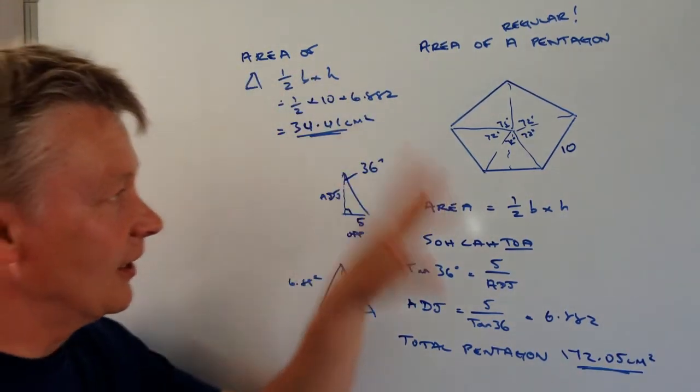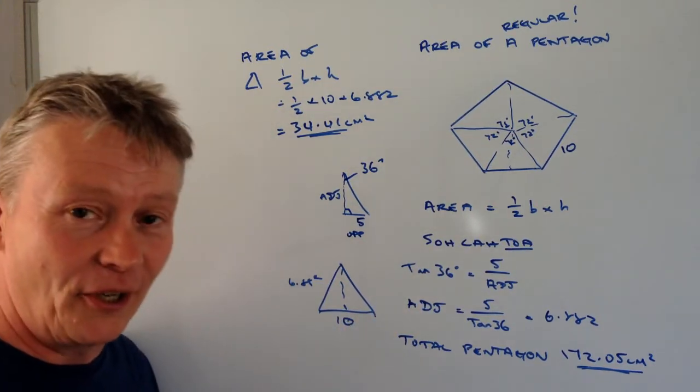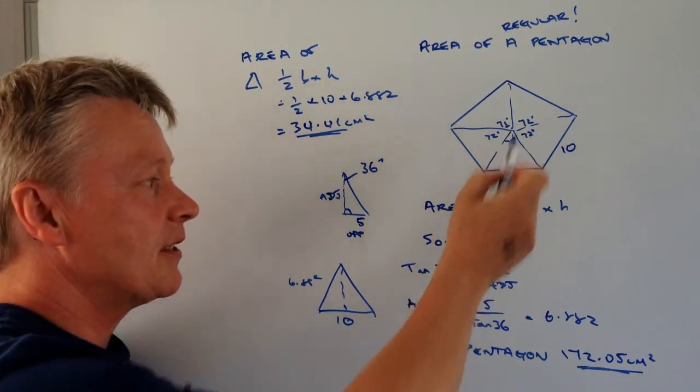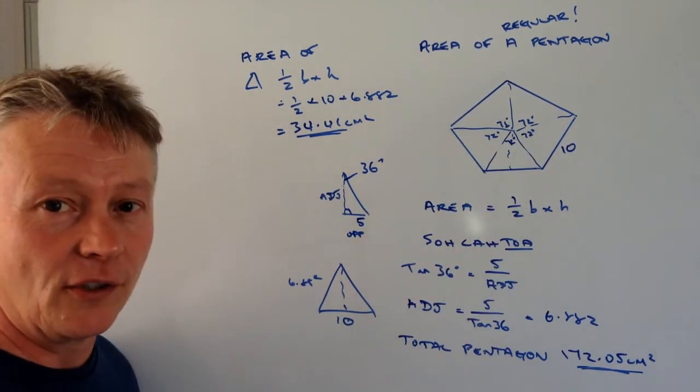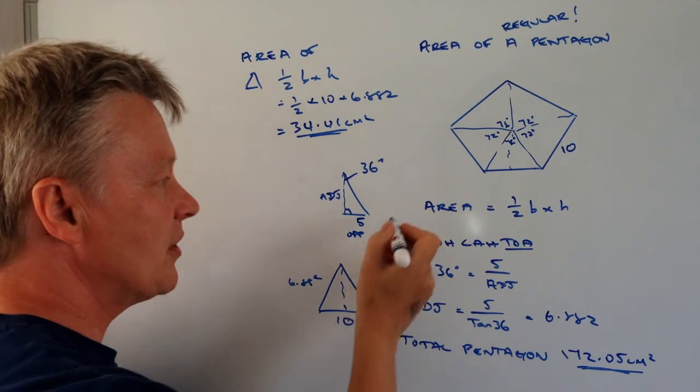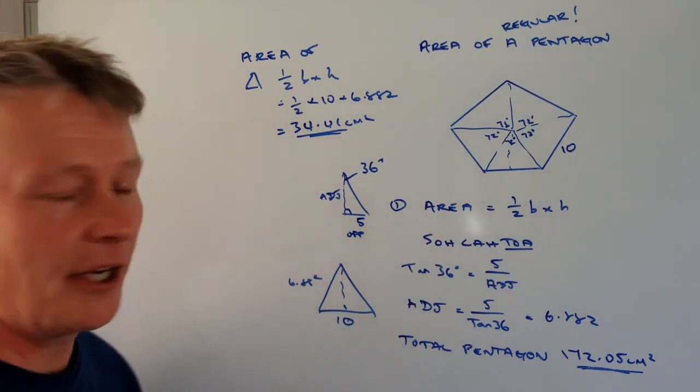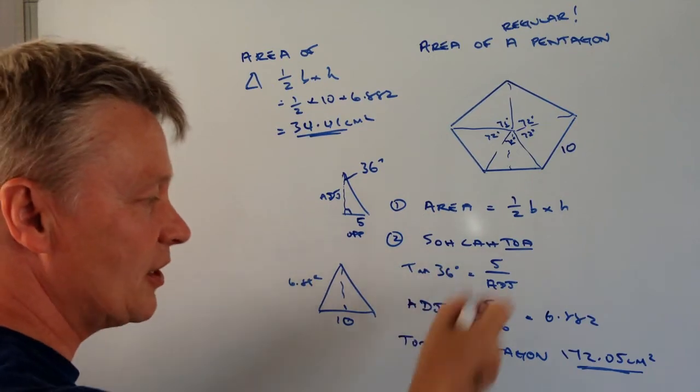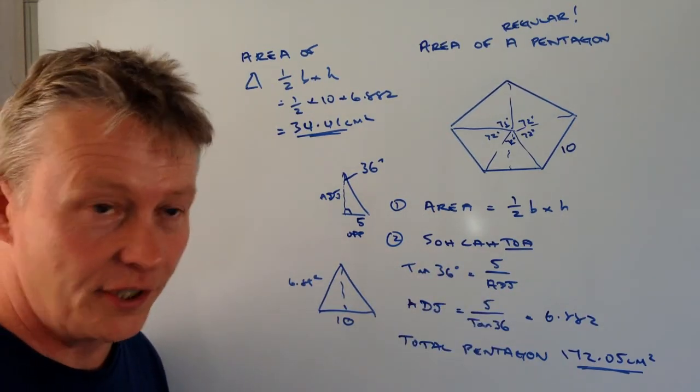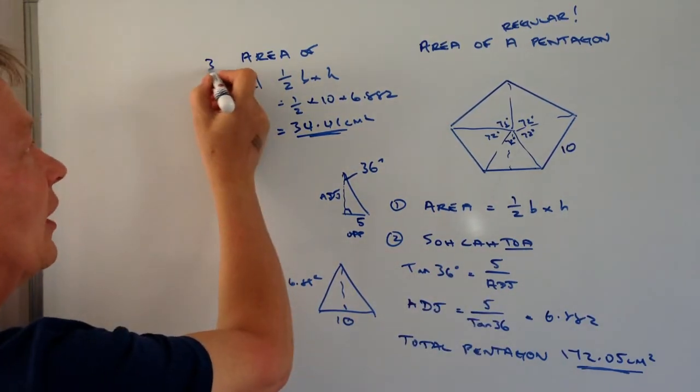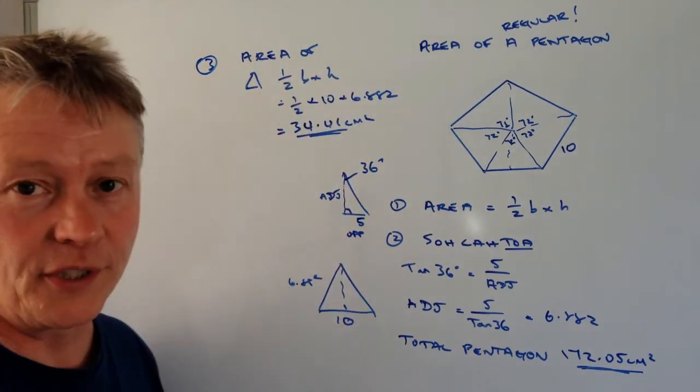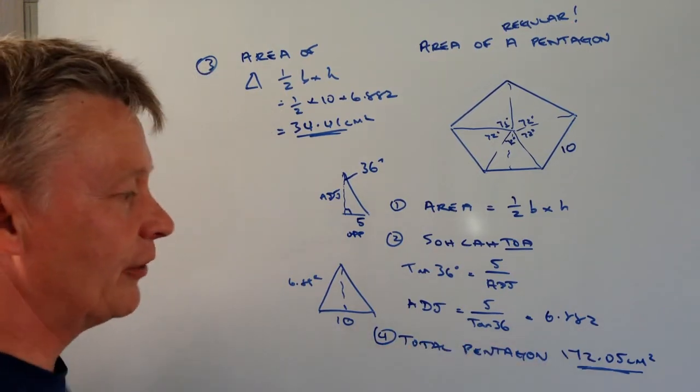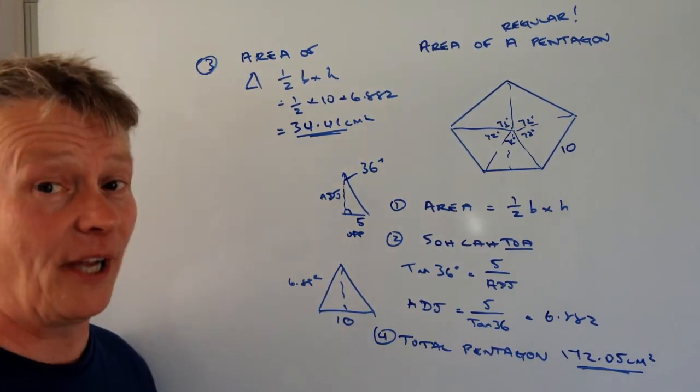Okay, so it's a little bit of a jumble on the board here, but hopefully you get the idea that what we're doing is breaking this regular pentagon down into a triangle. We're using Sokotoa, so this is your first point. This is the information we need. The second point is we're going to use Sokotoa to actually work out the information that we need. The third thing is we'll work out the original area of one particular triangle. And then the fourth thing is that we multiply it through and get the total area of the pentagon.